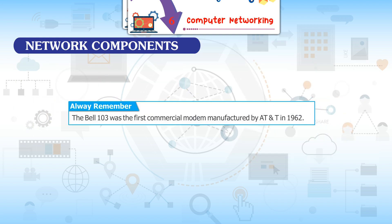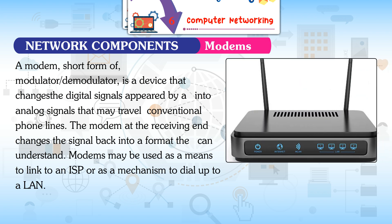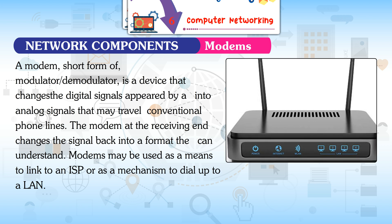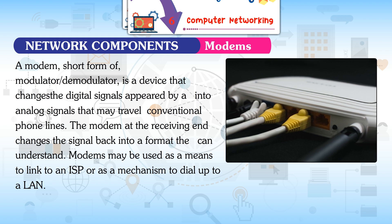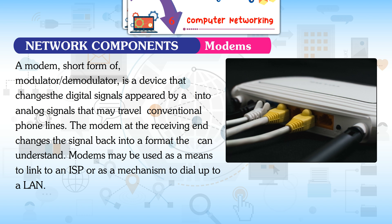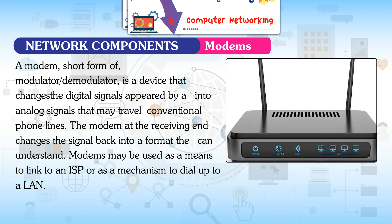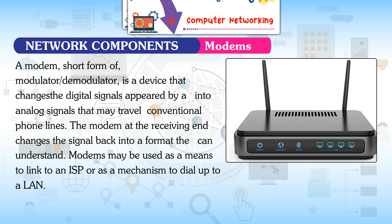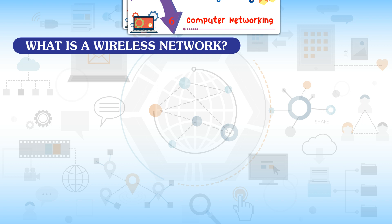The Bell 103 was the first commercial modem manufactured by AT&T in 1962. A modem, short for modulator-demodulator, is a device that changes the digital signals produced by a computer into analog signals that may travel over conventional phone lines. The modem at the receiving end changes the signal back into a format the computer can understand. Modems may be used to link to an ISP or as a mechanism to dial up to a LAN.